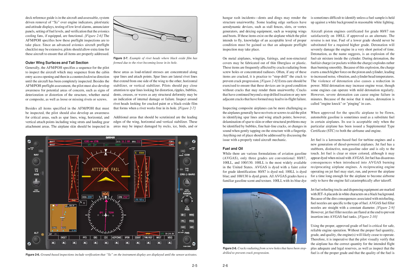Detonation will severely damage the engine in a very short period of time. Detonation, as the name suggests, is an explosion of the fuel-air mixture inside the cylinder. During detonation, the fuel/air charge, or pockets within the charge, explodes rather than burning smoothly. Because of this explosion, the charge exerts a much higher force on the piston and cylinder, leading to increased noise, vibration, and cylinder head temperatures. The violence of detonation also causes a reduction in power. Mild detonation may increase engine wear, though some engines can operate with mild detonation regularly. However, severe detonation can cause engine failure in minutes. In cars, detonation is called engine knock or pinging. When approved for the specific airplane, automobile gasoline is sometimes used as a substitute fuel, but only when the particular airplane has been issued a Supplemental Type Certificate (STC) for both the airframe and engine.